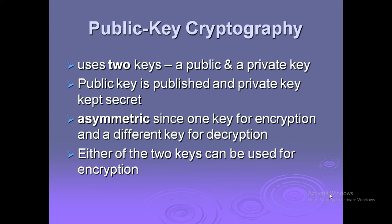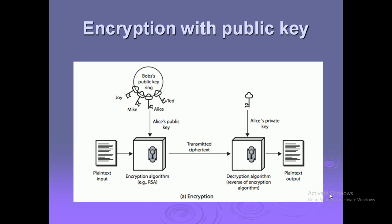Encryption with public key: here we see that the plaintext and the encryption use Alice's public key. The plaintext is encrypted by Alice's public key and the ciphertext is transmitted to the receiver, who decrypts it using Alice's private key.